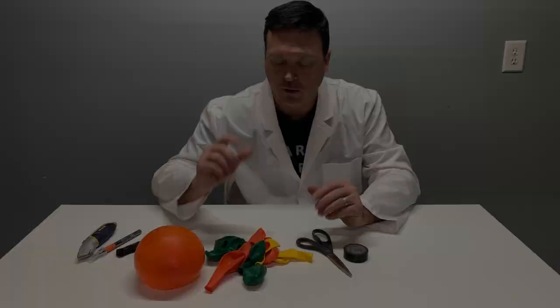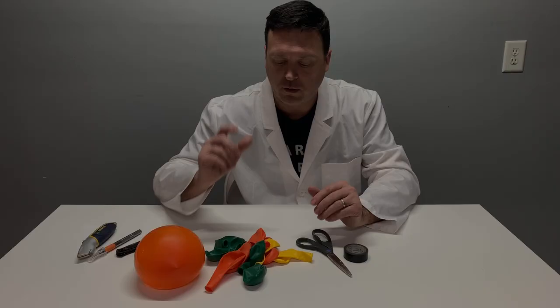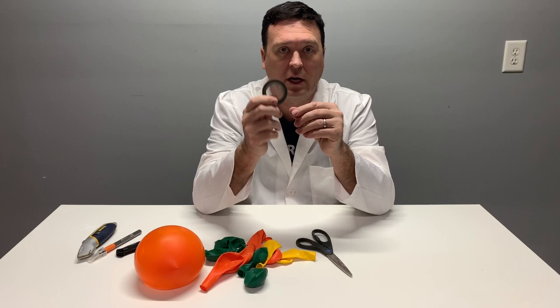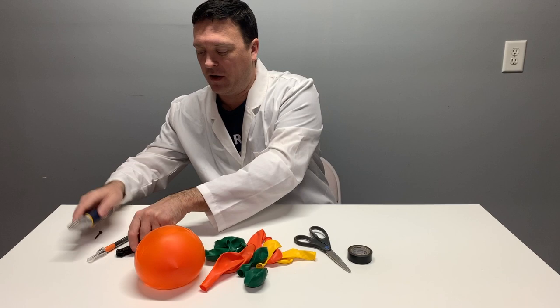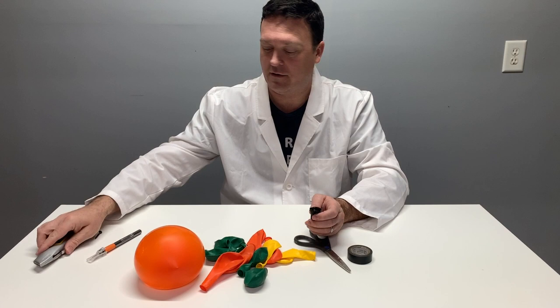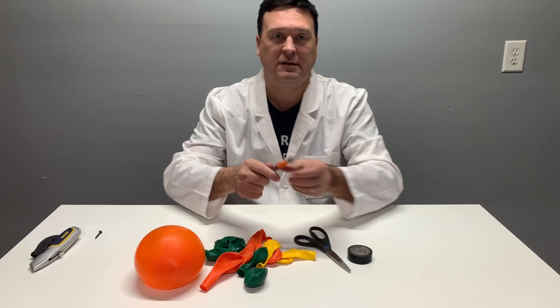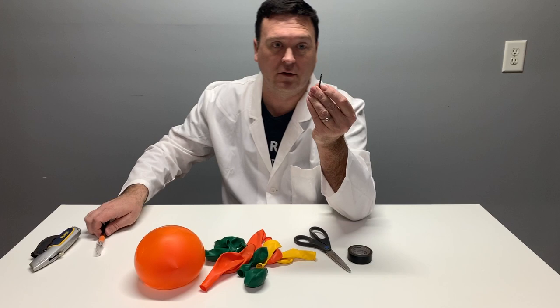So to do this experiment, we're going to need some balloons, some black electrical tape to use on the balloon, some scissors to cut the tape, and then some type of device to puncture the balloon. I've got razor knives, just a regular knife, an X-Acto knife blade, or something like a screw or a needle or a nail. We just need to be able to pop the balloon.